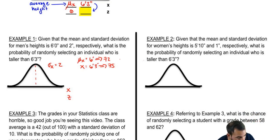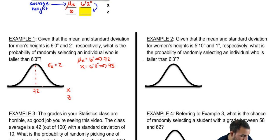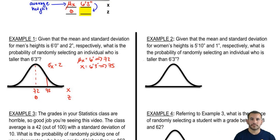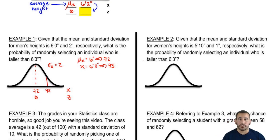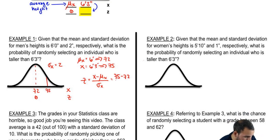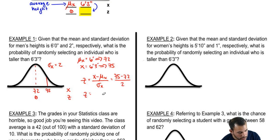So we end up with a mean of 72 — the z-score for the mean is 0 — and then an x-value of 75. That's greater than 72, so we're to the right, meaning the z-score will be positive. To get that z-score: z = (x - μ) / σ = (75 - 72) / 2 = 3/2 = 1.5.